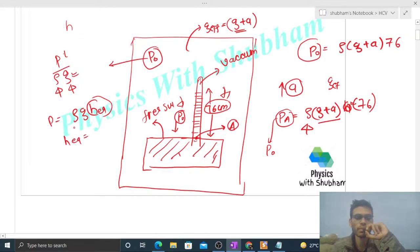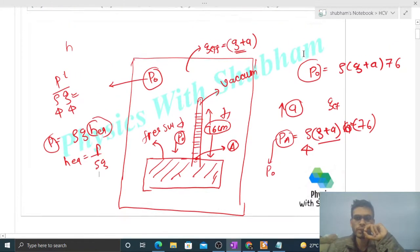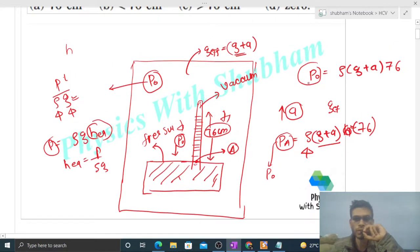h equivalent is nothing but pressure divided by rho into g. So to find the equivalent height of mercury for this pressure, we divide p naught by rho into g. That will be your h equivalent, the equivalent height for this pressure.